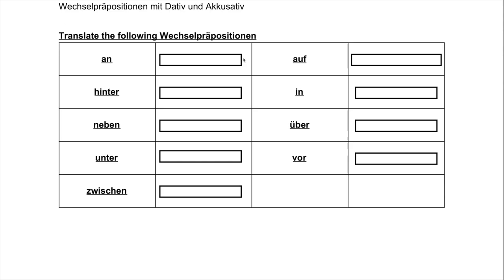First, let's find out what these words even mean. Starting in alphabetical order, we have 'an,' which means 'on' or 'on to,' especially if you are throwing something onto something. This is for things that are vertical. So if you're hanging something on a wall, that is accusative — onto the wall. If it's already hanging there after you've done this, then that is dative because it's hanging on the wall.